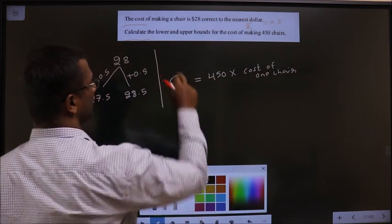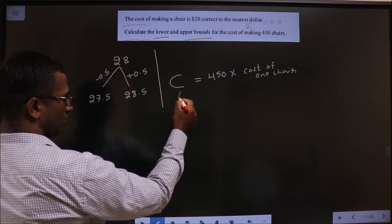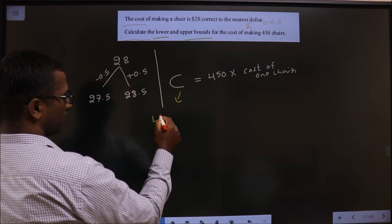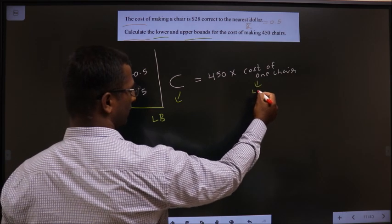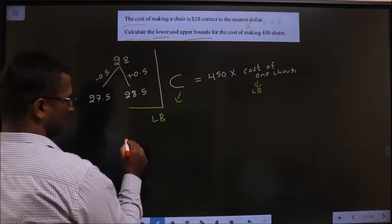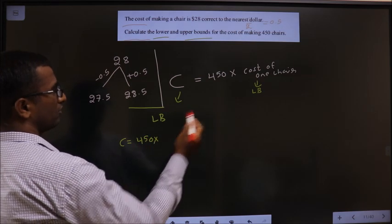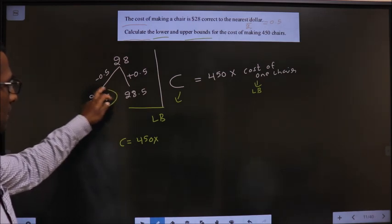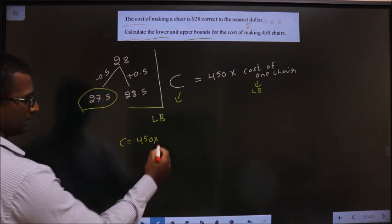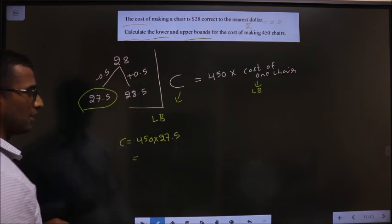Now, here you need both lower and upper bound. So to get the lower bound for this one, I should take lower bound for here as well. So C equal to 450 times lower bound for cost of 1 chair is 27.5. So into 27.5. Put this in the calculator.